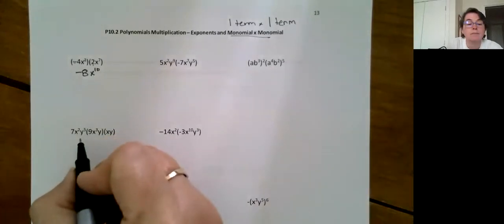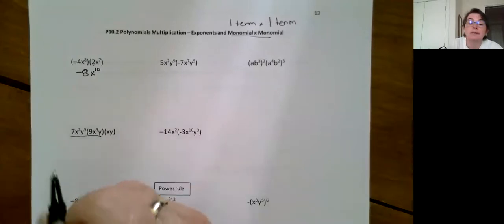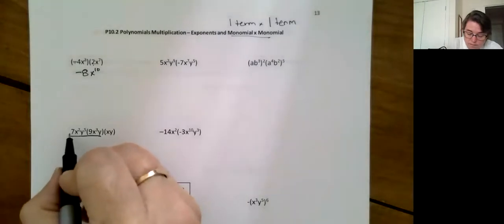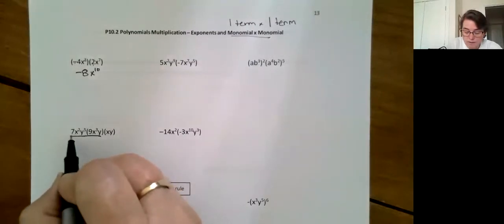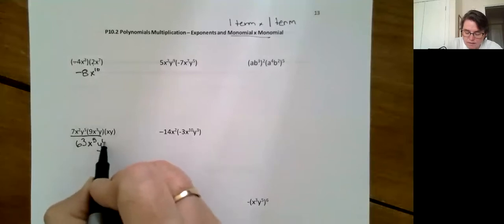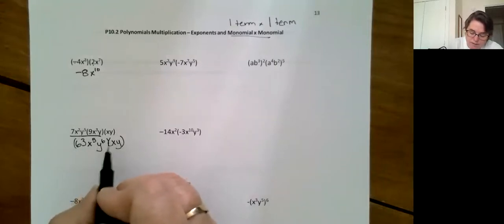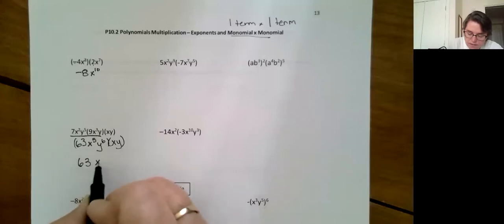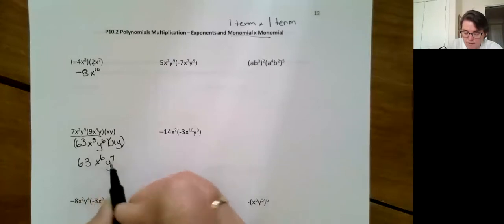Let's do the next one. If we follow order of operations, you want to do the first two. Seven times nine is sixty-three, x to the two and three more, that's x to the fifth. Y to the fifth and one more, that's six times xy. Sixty-three times one is 63. X to the fifth times x is x to the sixth, and y to the sixth times y is y to the seventh. And there we go.